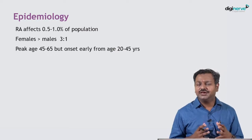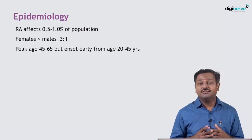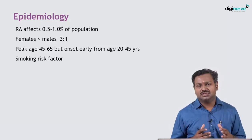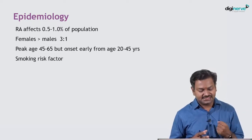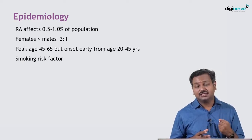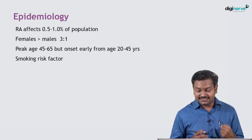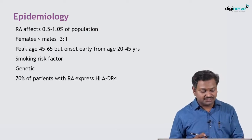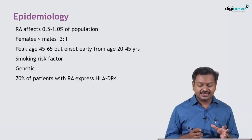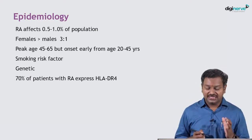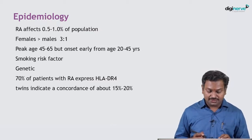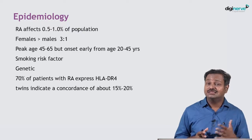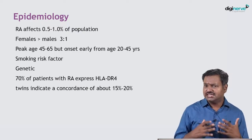Smoking is a very important modifiable risk factor. In those genetically predisposed with a family history, smoking becomes a crucial risk factor. There is a strong genetic predisposition: 70% of patients with rheumatoid arthritis express HLA-DR4. In twins, the concordance rate is around 15–20%, meaning if one twin has it, the other has up to a 20% chance of developing it.